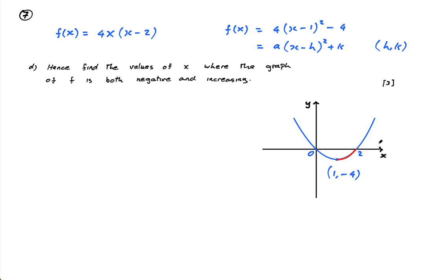So the graph would definitely give you your working, guys. If you didn't draw the graph you could just say minimum at (1, -4) and therefore increasing after one and negative between zero and two, therefore write down the answer.